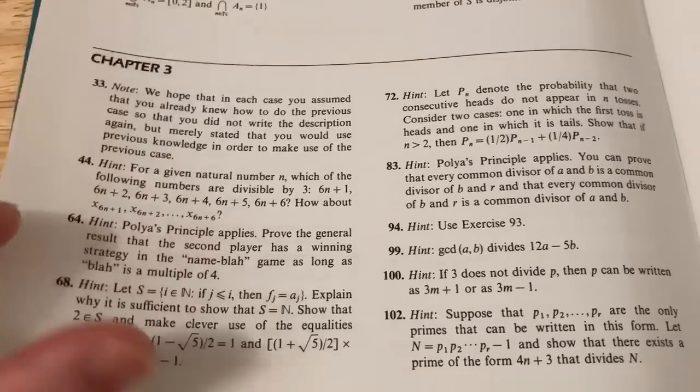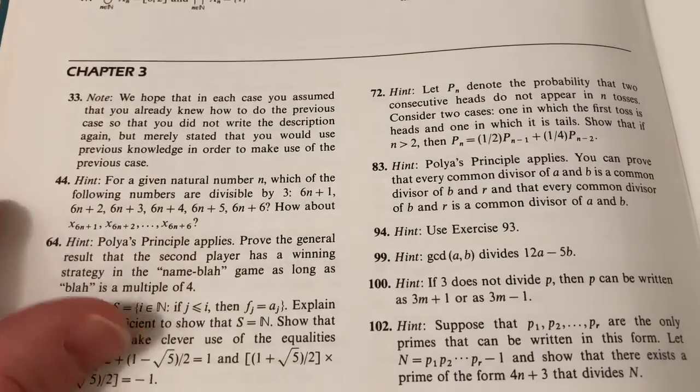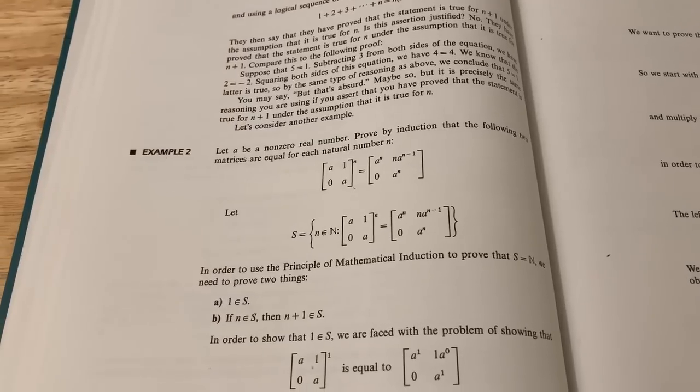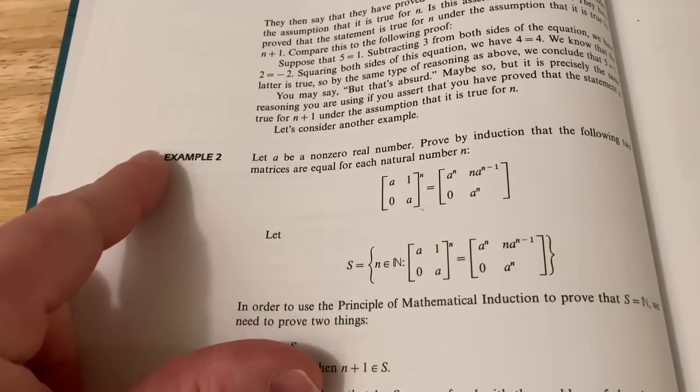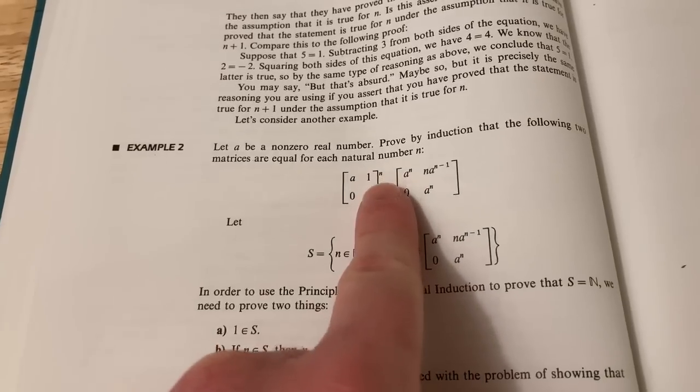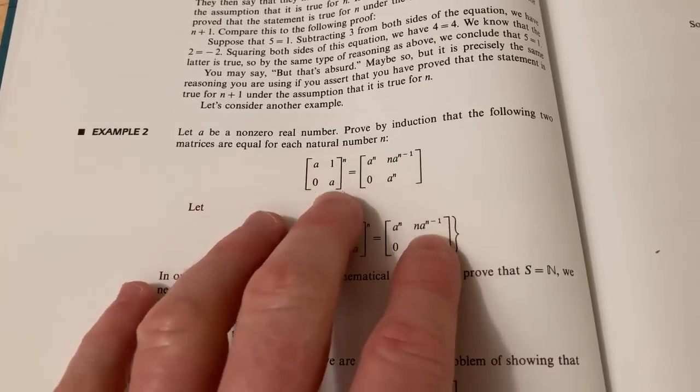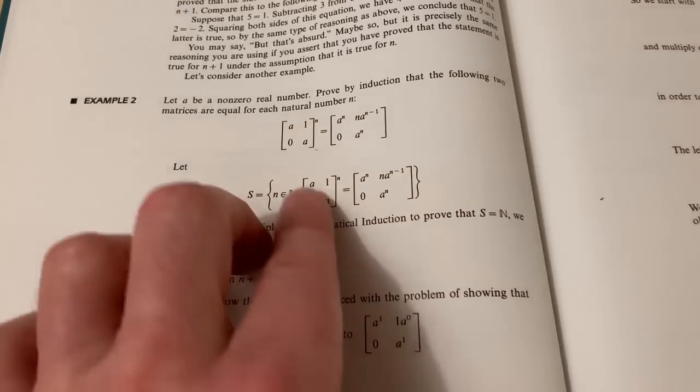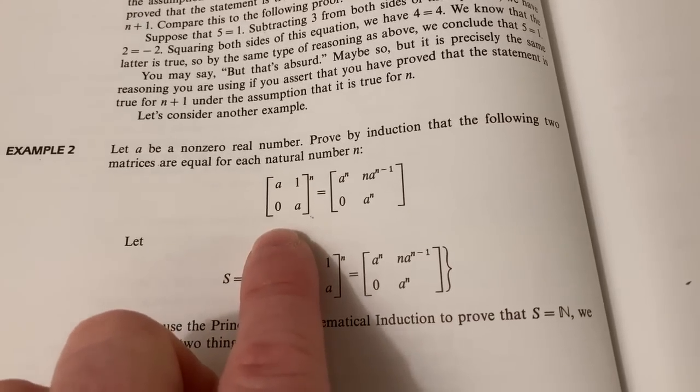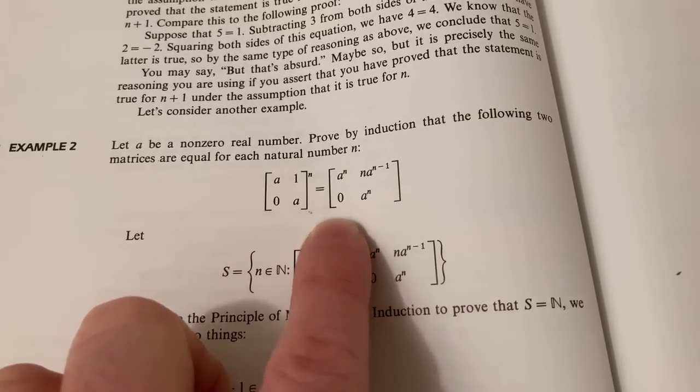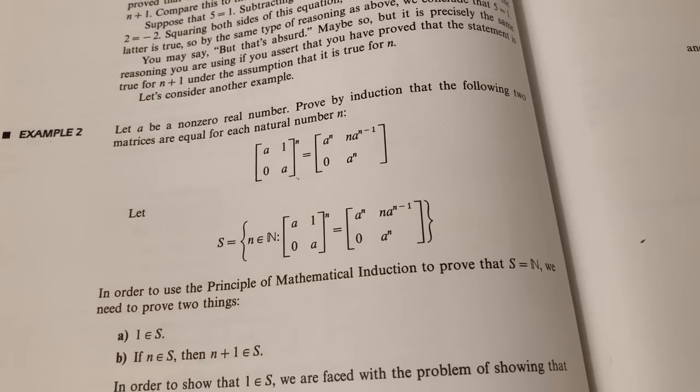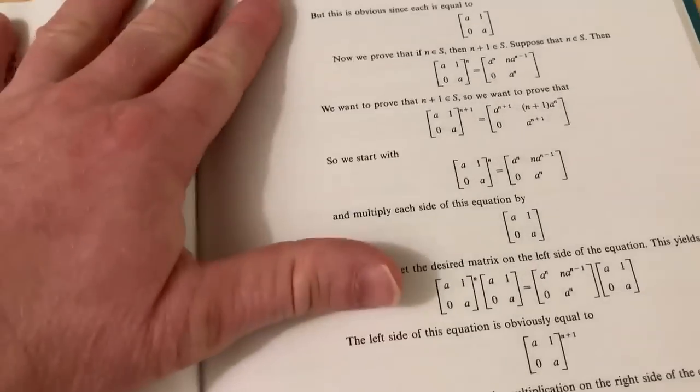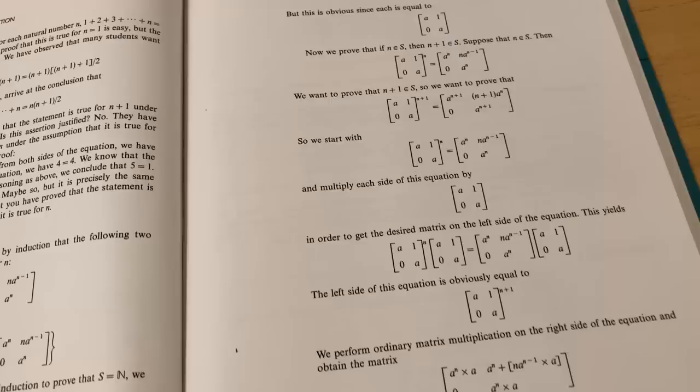So it gives you a hint as to perhaps the key steps in some of the problems. The book does actually have full proofs in it as examples. For example here, this is an induction proof where they go through all of the details and they prove this statement is true for each natural number using mathematical induction.